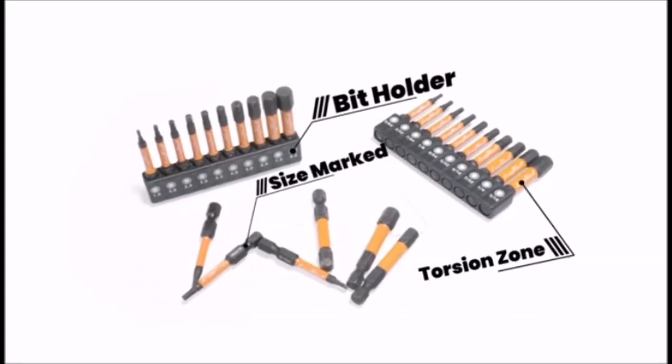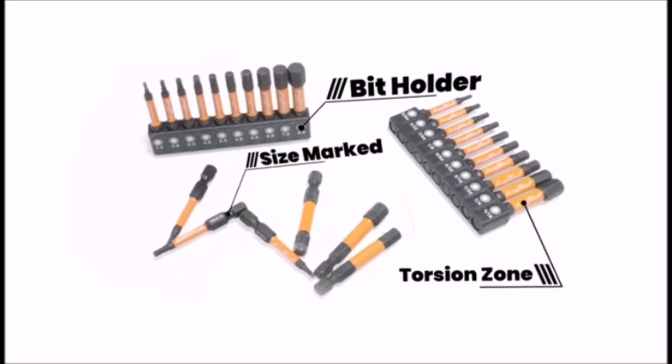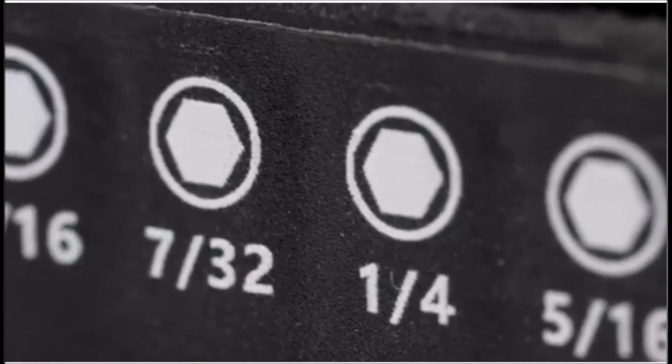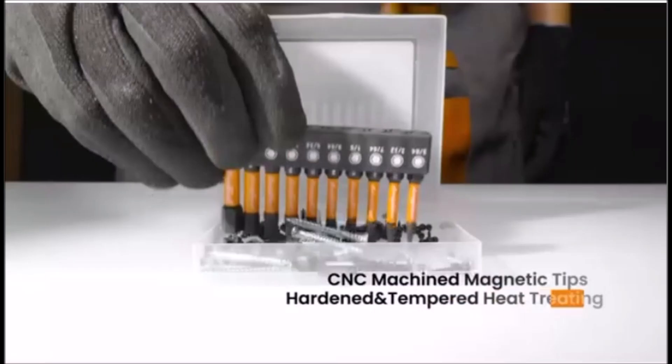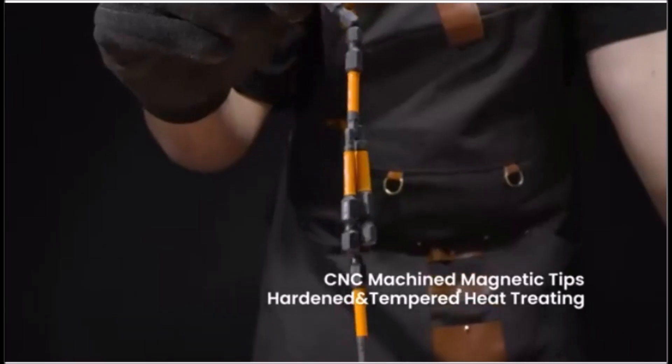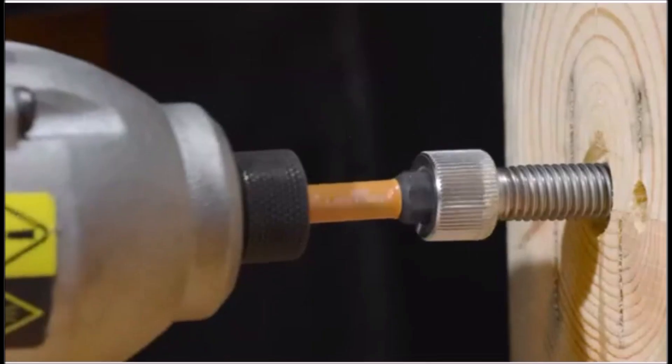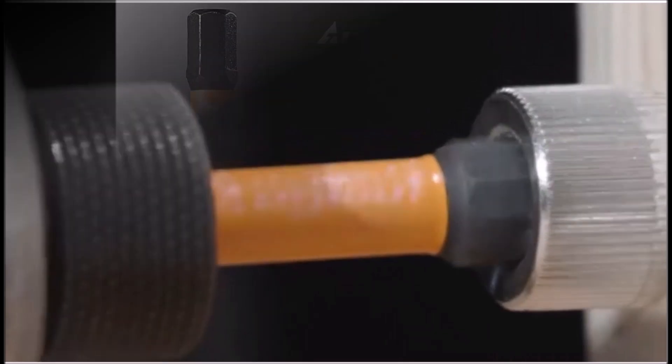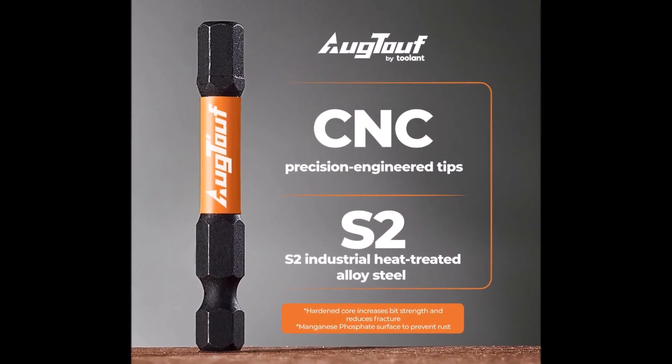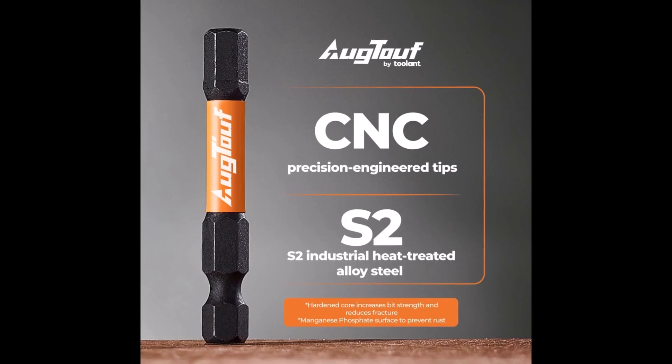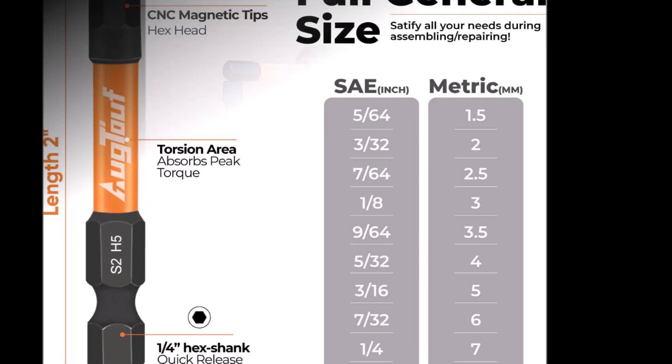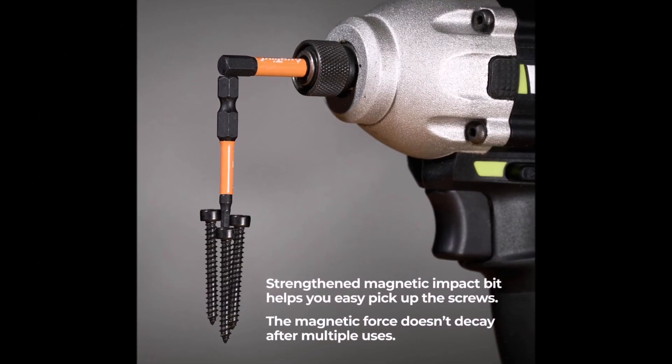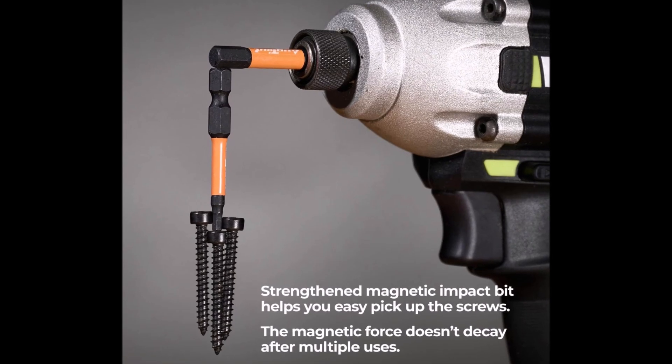Number seven. The Toolant Impact Hex Head Allen Wrench Drill Bit Set offers a solid mix of durability, precision, and convenience. With 20 pieces covering both SAE and metric sizes, it's ready for a wide range of tasks, from furniture assembly to heavy-duty electrical work. Each bit is CNC machined for a snug fit and made from S2 alloy steel with a hardened core, which helps resist breakage during high-torque jobs. The torsion zone absorbs shock, making it ideal for use with impact drivers. A manganese phosphate coating adds rust resistance, extending the life of the bits.